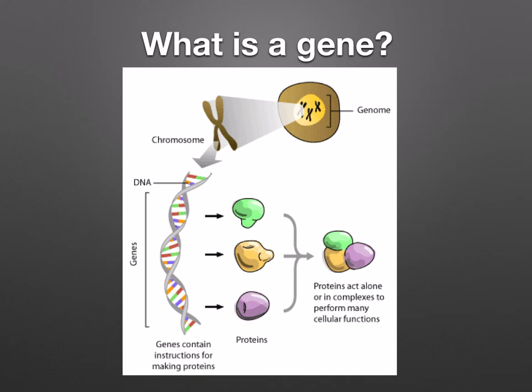Genes are sequences of nucleotides on a DNA molecule that code for a polypeptide. Polypeptides combine to form proteins, as you can see in this diagram. This means that genes determine the proteins of an organism. Remember that enzymes are also proteins and enzymes control the chemical reactions, so they control the development and activities of an organism.